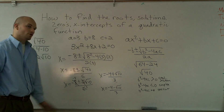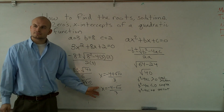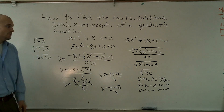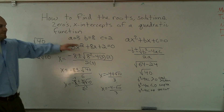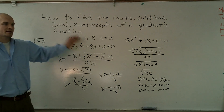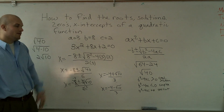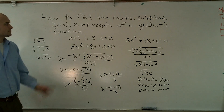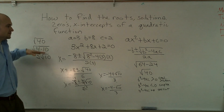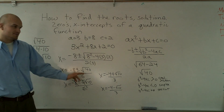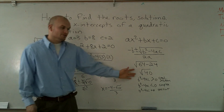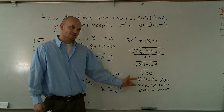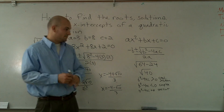So when you can't find a shortcut and you can't factor it, you can always fall back on the quadratic formula. Just make sure that you simplify your radical as much as possible and use your discriminant test to understand what your answer is going to be.